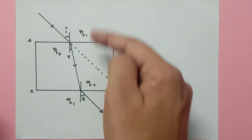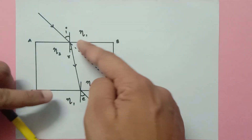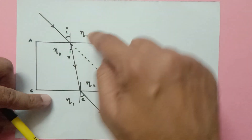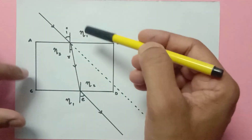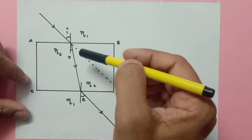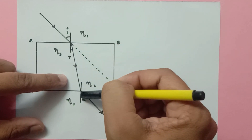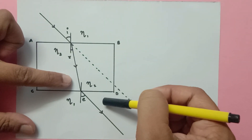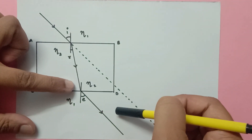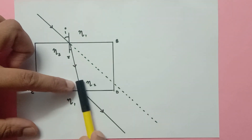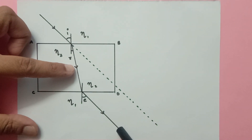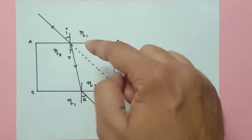Due to the change in medium from air to glass, the ray bends towards the normal — instead of traveling in a straight line, it bends towards the normal. This is the angle of incidence and this is the angle of refraction. Always remember, angles are measured with respect to the normal. The ray then continues straight until it hits the second surface. Due to the change in medium from denser to rarer — from glass back to air — it bends away from the normal. This ray is referred to as the emergent ray, and this is the angle of emergence.